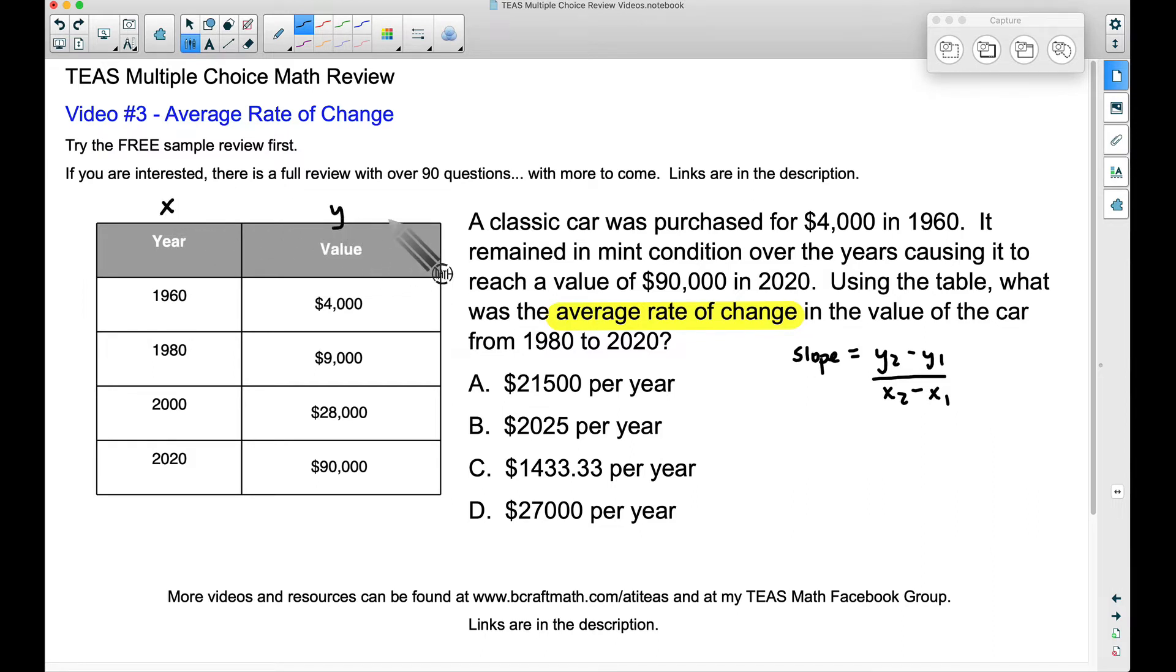Now if you don't understand what that means, it's okay. But very often with tables, we consider our first column x and our second column y. Let's look at the answer choices we have here. This first answer choice is saying the average rate of change was $21,500 per year. Answer choice B, $2,025 per year. What I want you to notice for all of these answer choices, we have dollars per year.